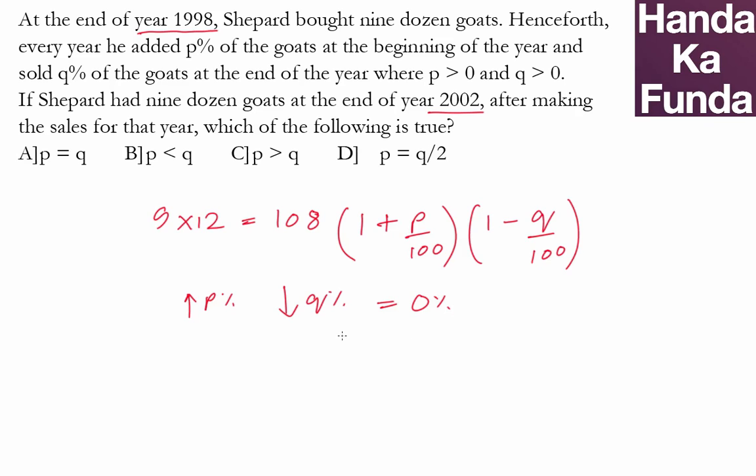If you know the formula of percentage changes, successive percentage changes, successive percentage of A percent and B percent is given by A plus B plus AB by 100.